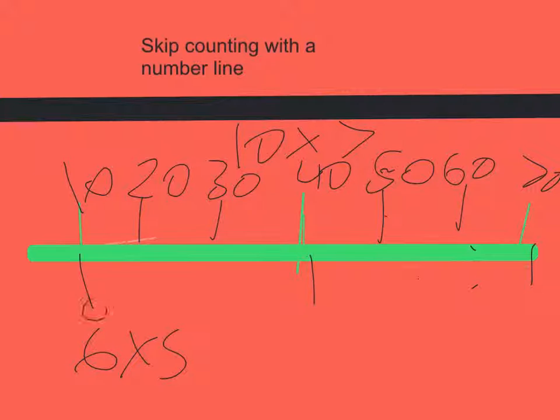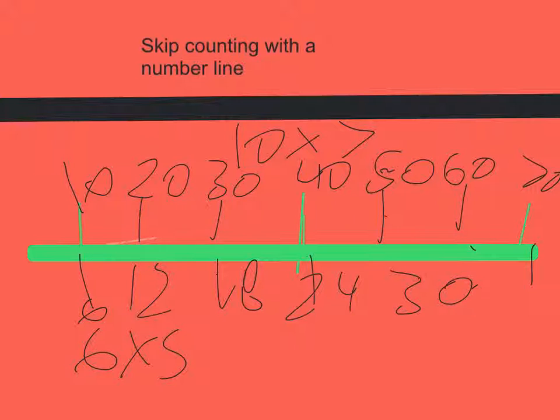Next, I'm going to use six times five: six, twelve, eighteen, twenty-four, thirty. That's your answer for six times five. That is how you use skip counting with the number line.